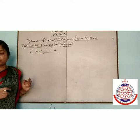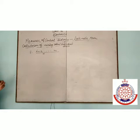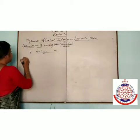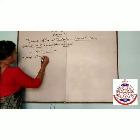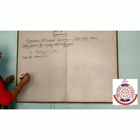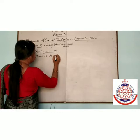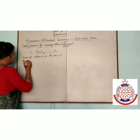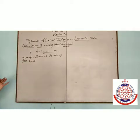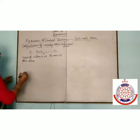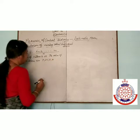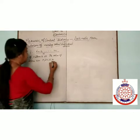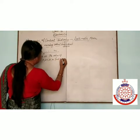For example, the mean of 5 items is 25. The values of 4 items are 10, 25, 35, and 40. We need to find out the 5th value.